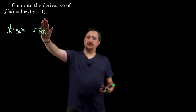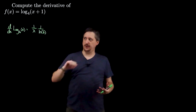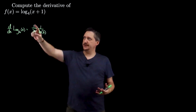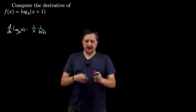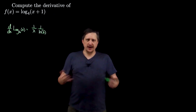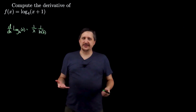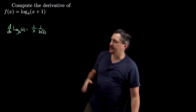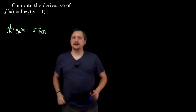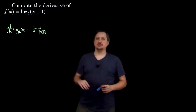So that whole piece goes away and you get just 1 over x. But it still adheres to the same general rule.